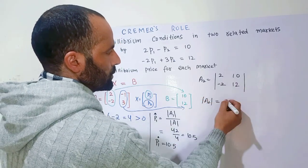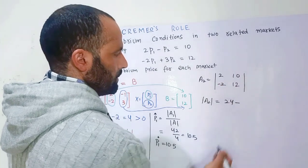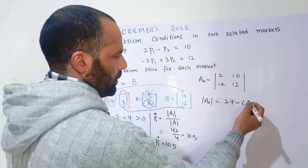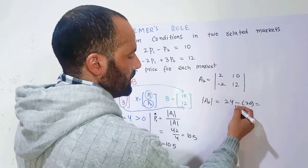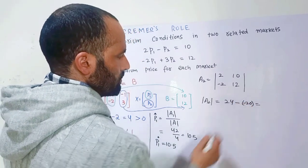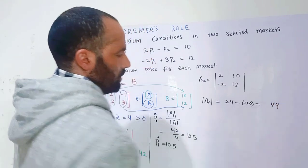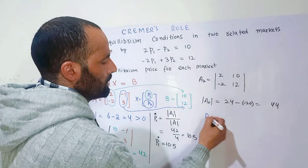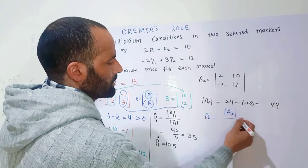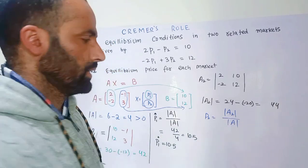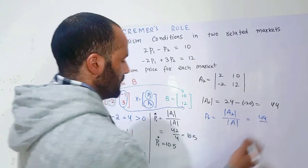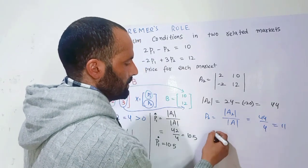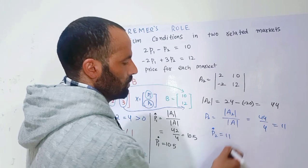Multiplying the principal diagonal: 2 times 12 is 24. Subtracting the product of the other diagonal: 10 times minus 2 is minus 20. So 24 minus minus 20 gives us 44, meaning det(A2) equals 44. The equilibrium value of p2 is 44 divided by 4, which equals 11. So p2 equals 11.